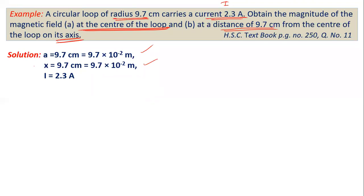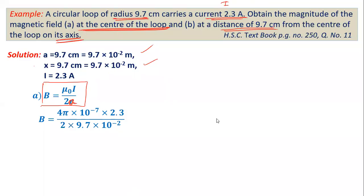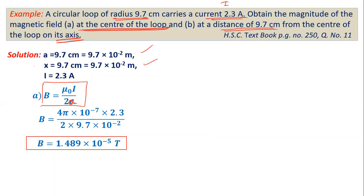At the center of the current-carrying coil, magnetic induction is given by the center formula. Substituting μ₀, I = 2.3 A, and radius a = 9.7 × 10⁻² m, the calculation gives B = 1.489 × 10⁻⁵ tesla (or weber per meter squared).